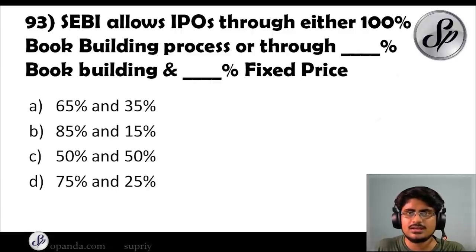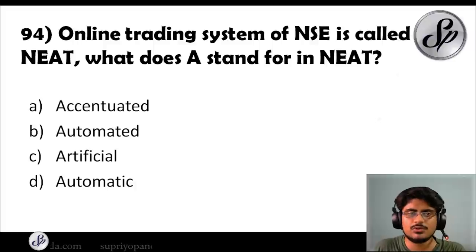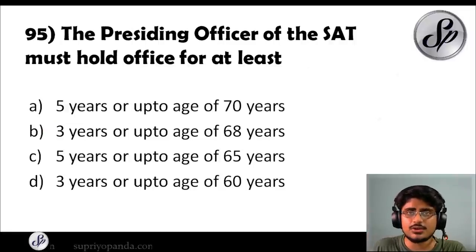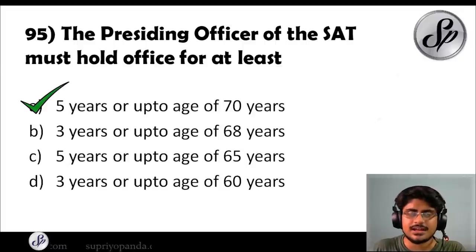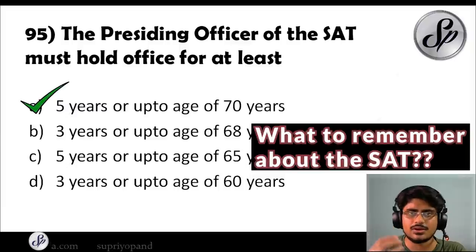Question ninety-three: SEBI allows IPOs through either 100% book building process or through 75% book building and 25% fixed price — these are the only two ways to proceed with an IPO. Question ninety-four: the online trading system of NSE is called NEAT. What does 'A' stand for in NEAT? The answer is 'Automated' — full form is National Exchange for Automated Trading. Question ninety-five: the presiding officer of the Securities Appellate Tribunal must hold office for how long? The answer is five years or up to the age of 70 years. Note: it was earlier 68 years, but was recently changed to 70 years by a gazette notification.